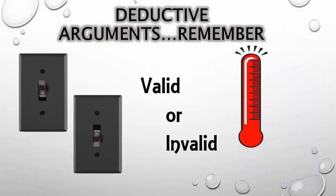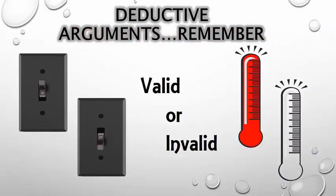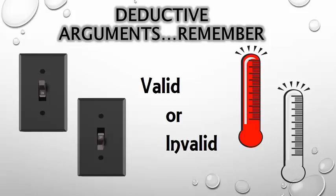So, deductive arguments are valid or invalid — degree of support is 100% or zero. Trust them or don't; there's no middle ground.